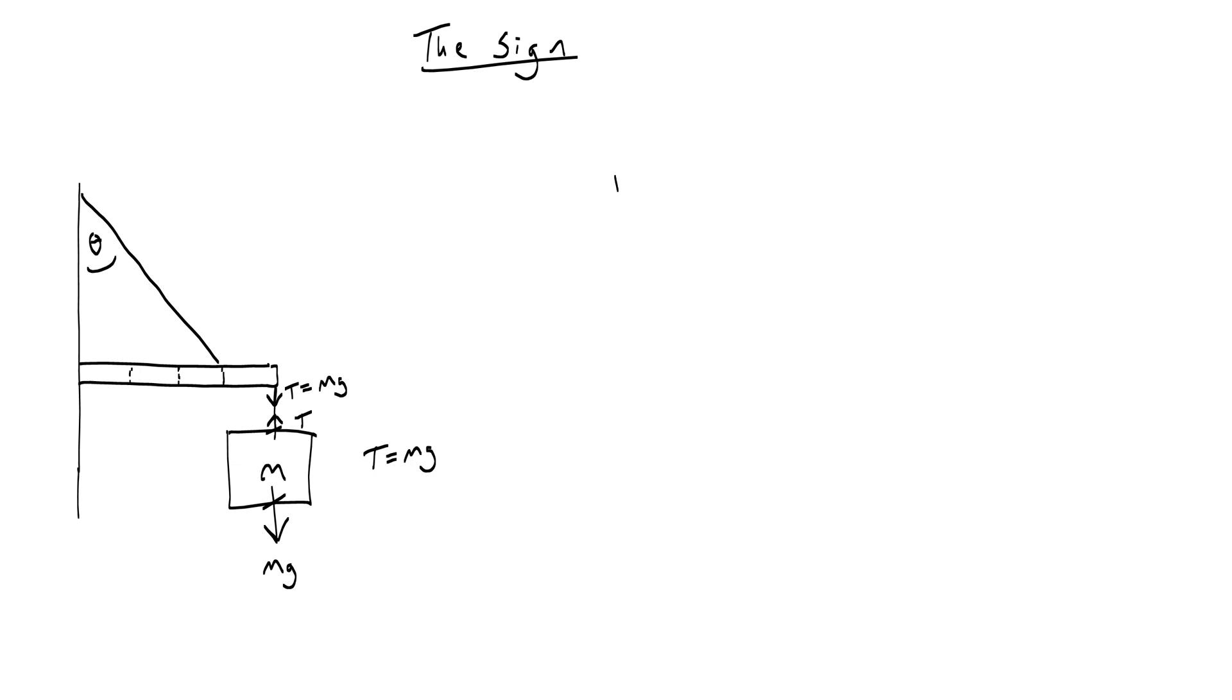Alright, now at this point I'm going to go ahead and draw the rod as an extended body, like it's a free body diagram. I'm going to draw the different forces that are acting. So there's that tension down which we can just really call mg.